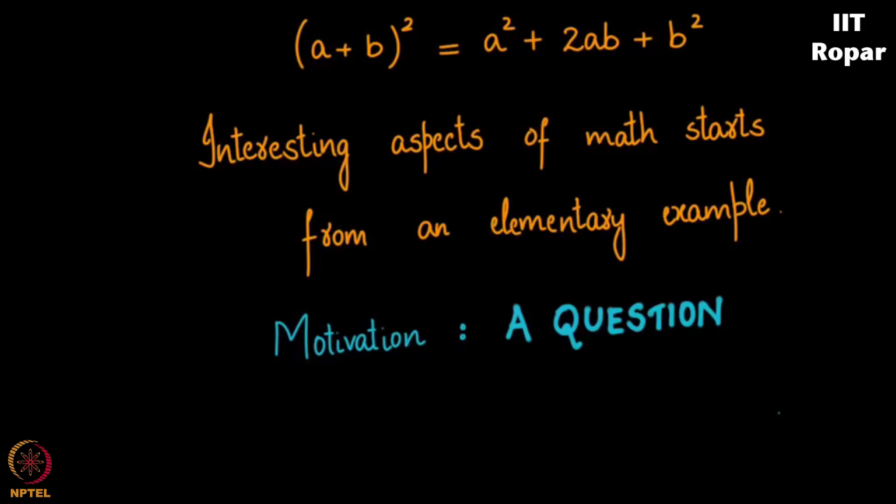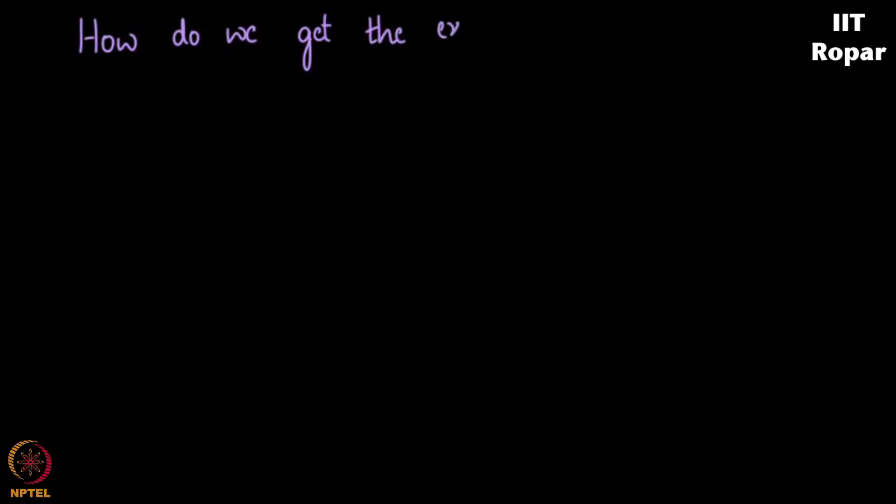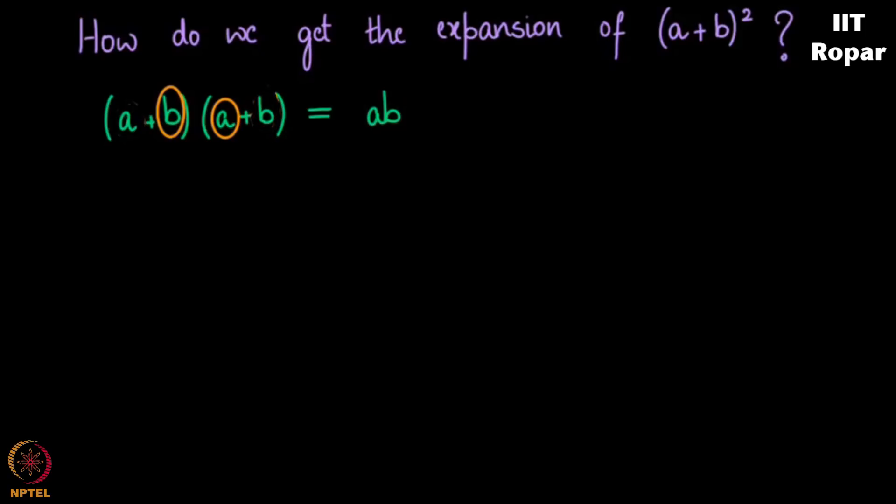So how do we get a plus b the whole square's expansion? We write a plus b next to each other, and then we pick an a here and then a b here. We get ab. When we pick a b here and then an a here, we will again get ab. And then you pick an a here and an a here, you get a square. Then you pick a b here and a b here, you get b square. Again, very elementary.